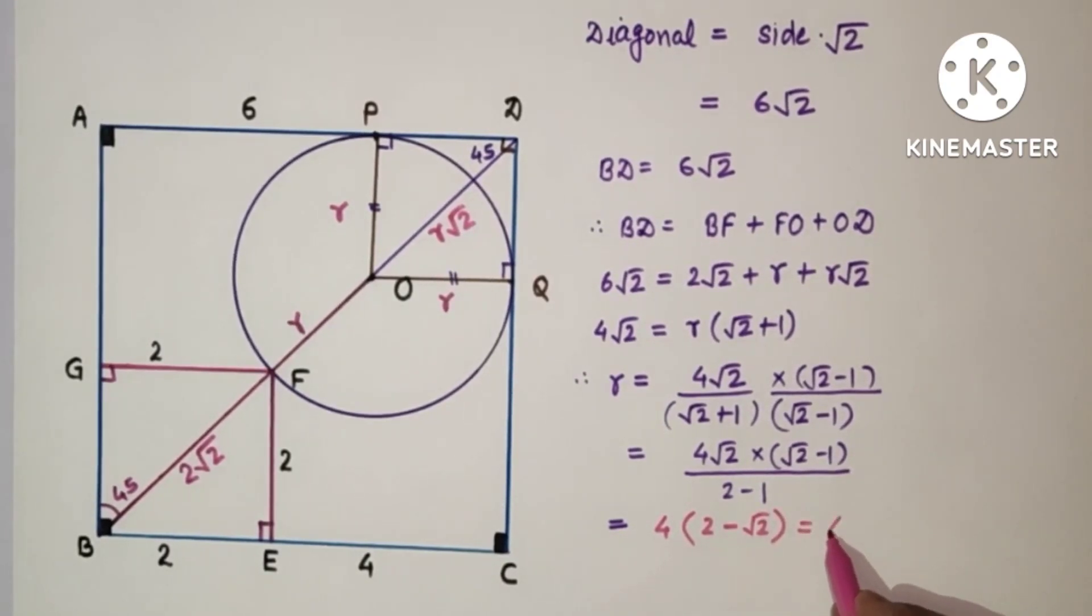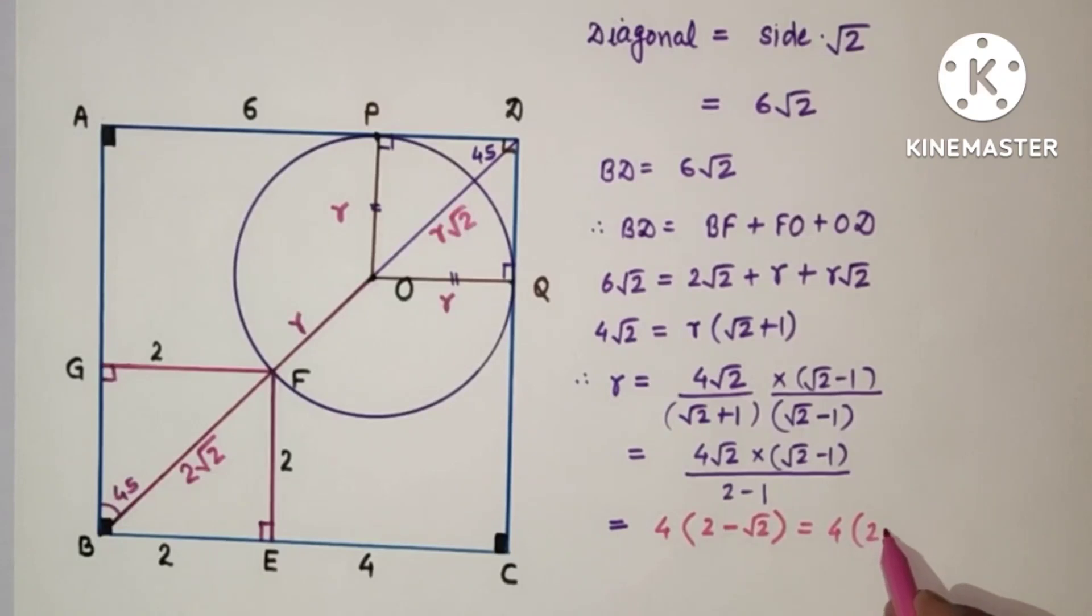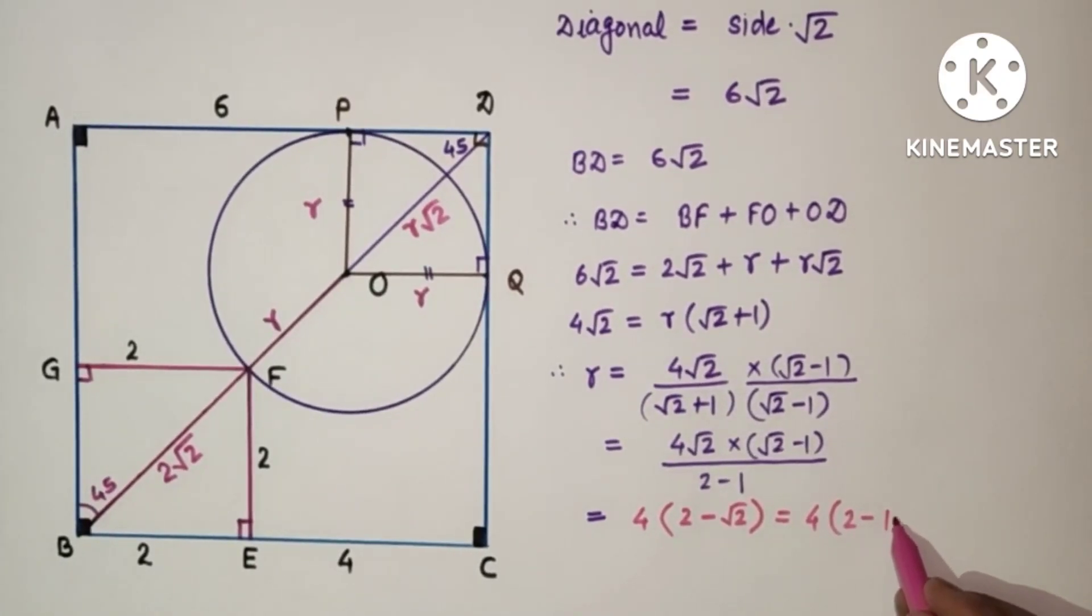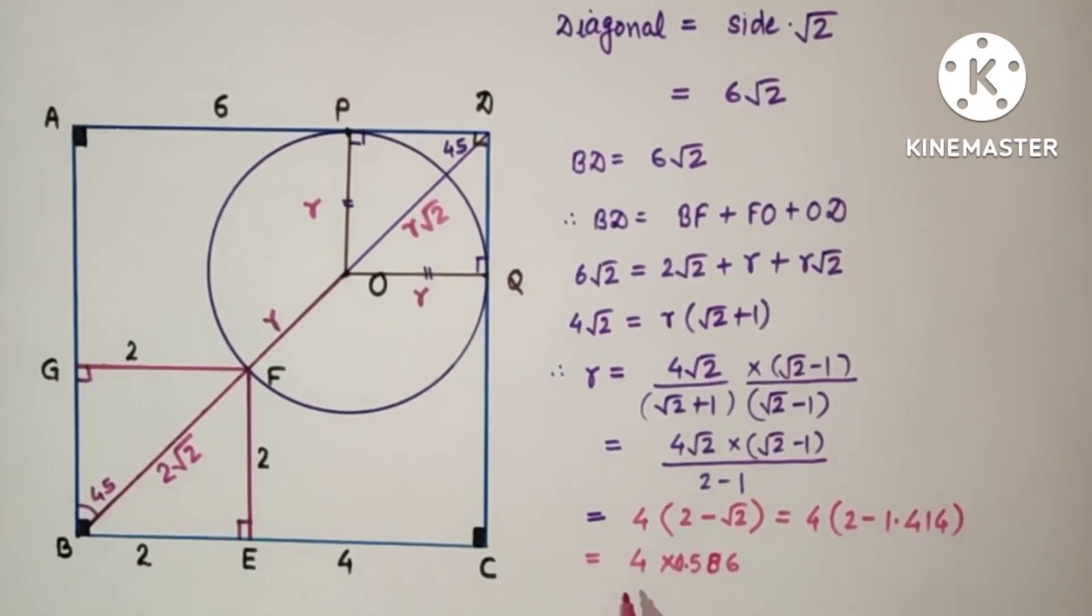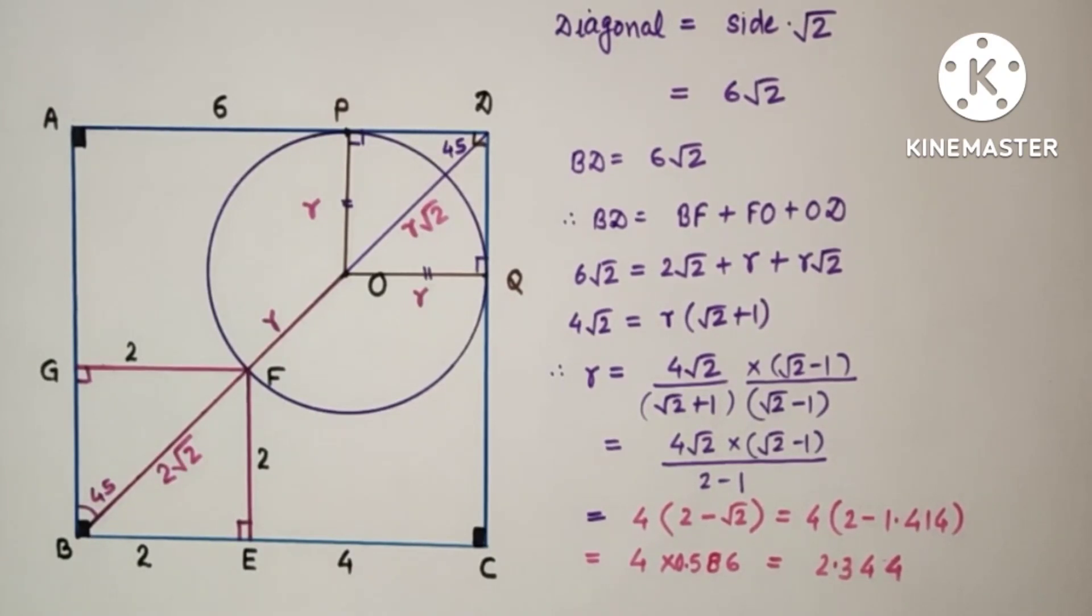So which is equal to 4, 2 minus, 2 minus, this is 1 point, root 2 value is 1.414. And which is equal to 4 into 2 minus 1.414 is 4 into 0.586, which is equal to 2.344 units.